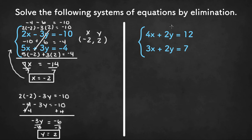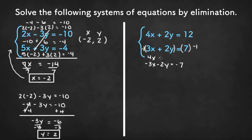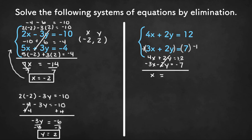Now for this second system of equations, the coefficients of one variable are identical. So we can subtract the equations to eliminate that variable, or we can multiply one of the equations by negative 1 and then add. Let's multiply the bottom equation by negative 1. That leaves us with negative 3x minus 2y equals negative 7. We rewrite the first equation and add the two equations together: 4x minus 3x gives x, and 2y plus negative 2y gives 0y, so x equals 12 minus 7, or 5. That should be the solution for the x value.